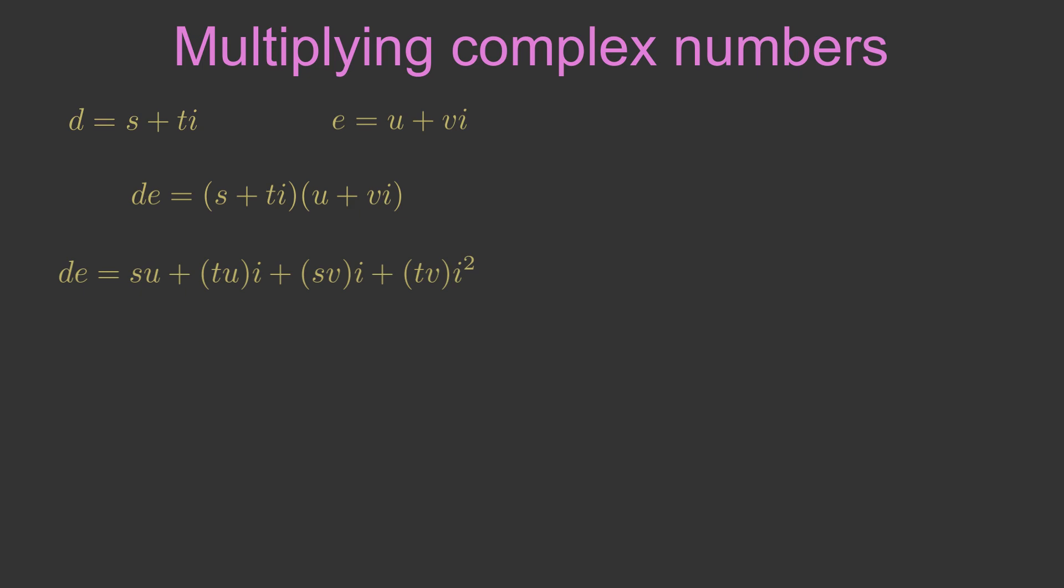Since i squared is minus 1, tv i squared becomes minus tv. So we can simplify the expression. The real part is su minus tv and the imaginary part is tu plus sv.